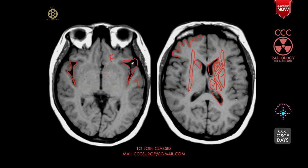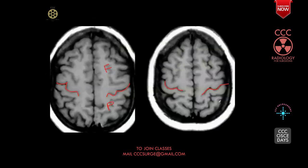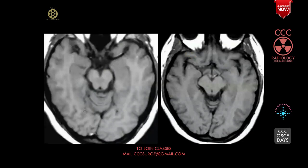Going cranially from the sylvian fissure, you can see the deep gray matters: caudate nucleus, lentiform, and thalamus. More cranially, you can see the ventricle — the body and trigone of the lateral ventricle — where the anteriorly situated lobe is the frontal lobe and posteriorly situated is the occipital lobe. Going more cranial, posteriorly comes the parietal lobe above the level of the lateral ventricles. The main sulcus dividing the frontal and parietal lobe is the central sulcus — the inverted hook-shaped sulcus. Going more caudally comes the brainstem: midbrain, then pons, then medulla, and posterior to the brainstem is the cerebellum.